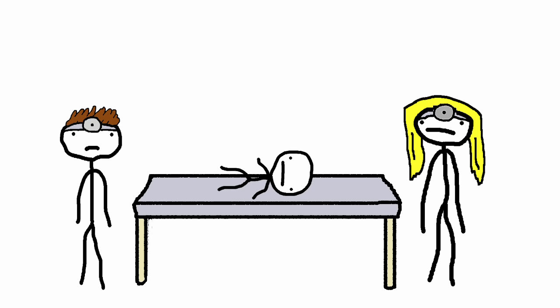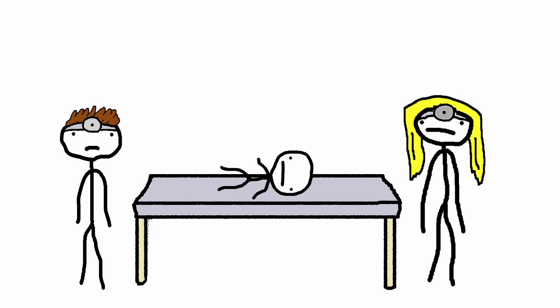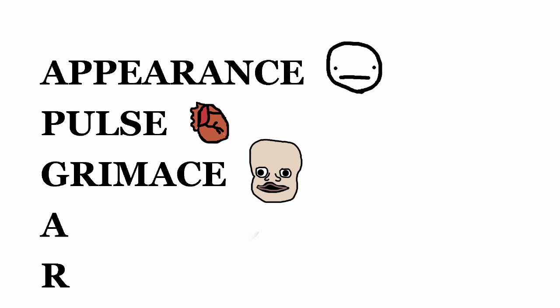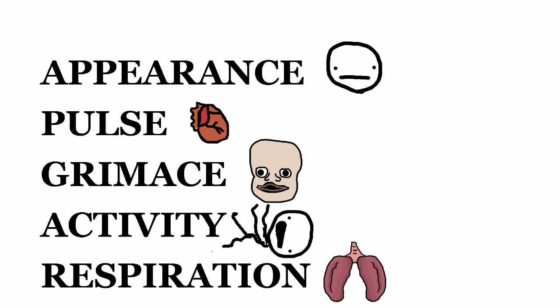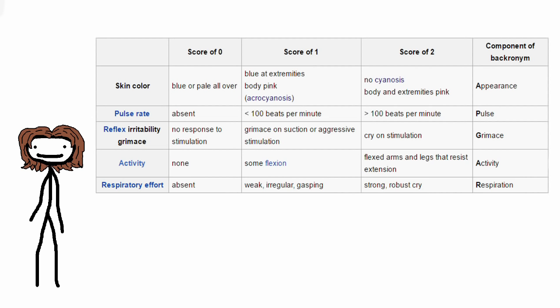Next we have the APGAR score. So the APGAR score is a rating system used by hospitals to determine how healthy a newborn baby is on a scale from 0 to 10. It's called APGAR based on its five criteria which include appearance, pulse, grimace, activity, and respiration. And each of these is rated on a scale from 0 to 2 to get your final score.